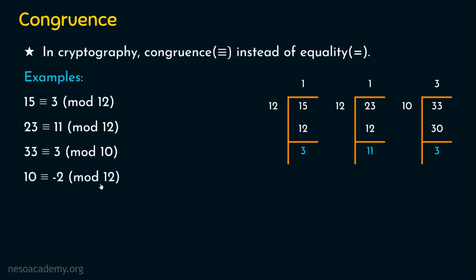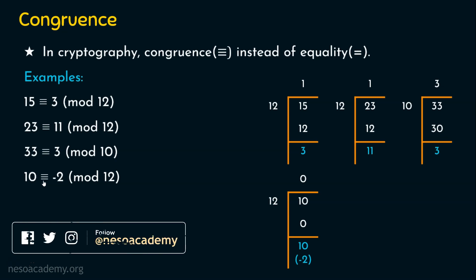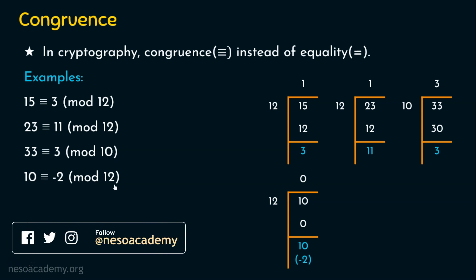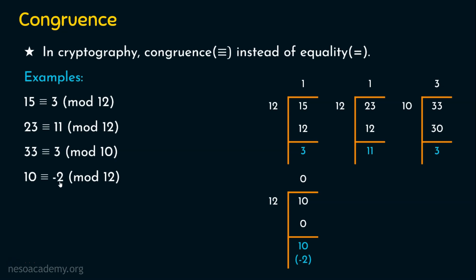Next: 10 is congruent to minus 2 mod 12. When 10 is divided by 12 — 12 goes 0 times and the remainder is 10. So 10 is congruent to 10 mod 12 is valid. But 10 mod 12 can also be written as minus 2, because minus 2 plus 12 equals 10. So both 10 and minus 2 are valid — 10 is congruent to minus 2 mod 12 is also a perfectly valid congruence.